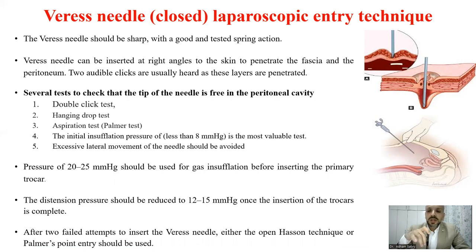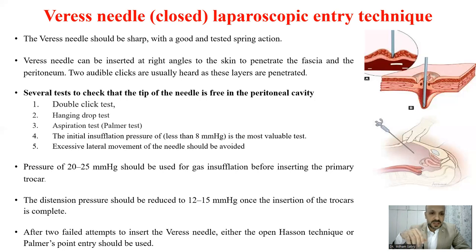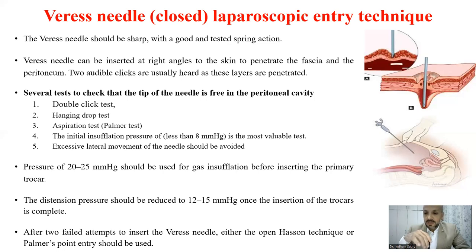The pressure during entry should be 20 to 25 mmHg before inserting the primary trocar, because this increases the distance between the umbilicus and the great vessels at the back to about 6 cm. If the pressure is less, the distance will be low and there is a higher possibility of great vessel injury. Once all trocars are inside, you can drop the pressure to 12 to 15 mmHg as the working pressure during surgery to avoid respiratory compromise. If you fail twice to insert the Veress needle, stop, ask for help from your consultant, and convert to another point of entry — either the Palmer point or the open Hasson technique.